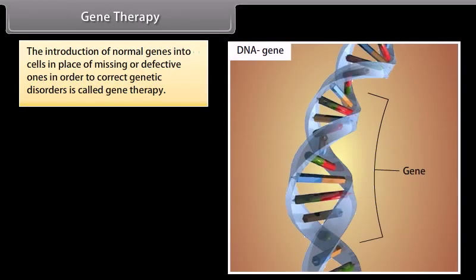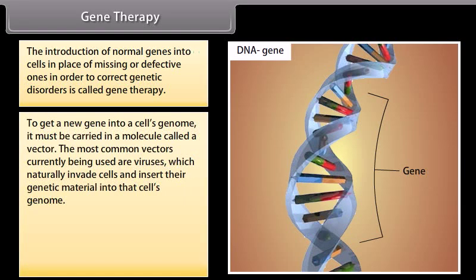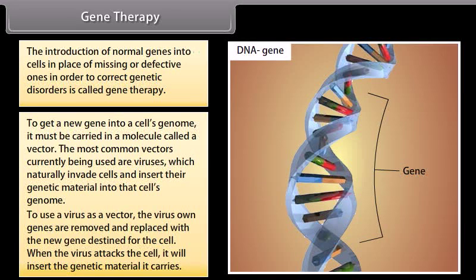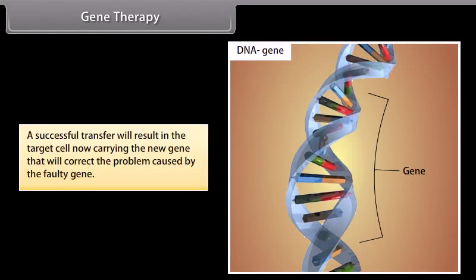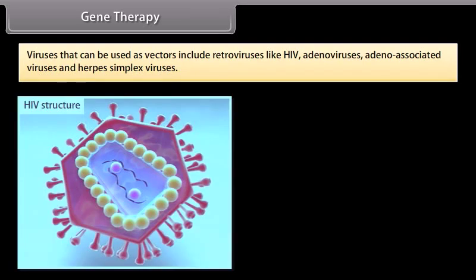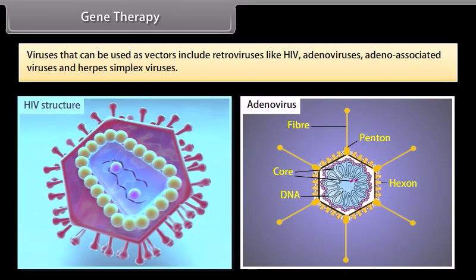Gene Therapy: The introduction of normal genes into cells in place of missing or defective ones in order to correct genetic disorders is called gene therapy. To get a new gene into a cell's genome, it must be carried in a molecule called a vector. The most common vectors currently being used are viruses, which naturally invade cells and insert their genetic material into that cell's genome. The virus's own genes are removed and replaced with a new gene destined for the cell. When the virus attacks the cell, it inserts the genetic material it carries. A successful transfer results in the target cell carrying the new gene that will correct the problem. Viruses that can be used as vectors include retroviruses like HIV, adenoviruses, adeno-associated viruses, and herpes simplex viruses.